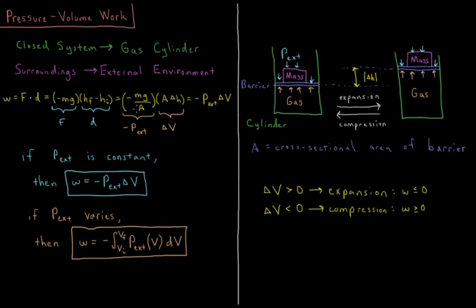We can refactor this where we divide the force by area and we multiply the displacement by area. So we have minus mg over A and then A times delta H. So force divided by area, that is a unit of pressure. So newtons divided by meters squared is a pascal of pressure, the SI unit of pressure. So this is the negative external pressure acting on this gas cylinder.